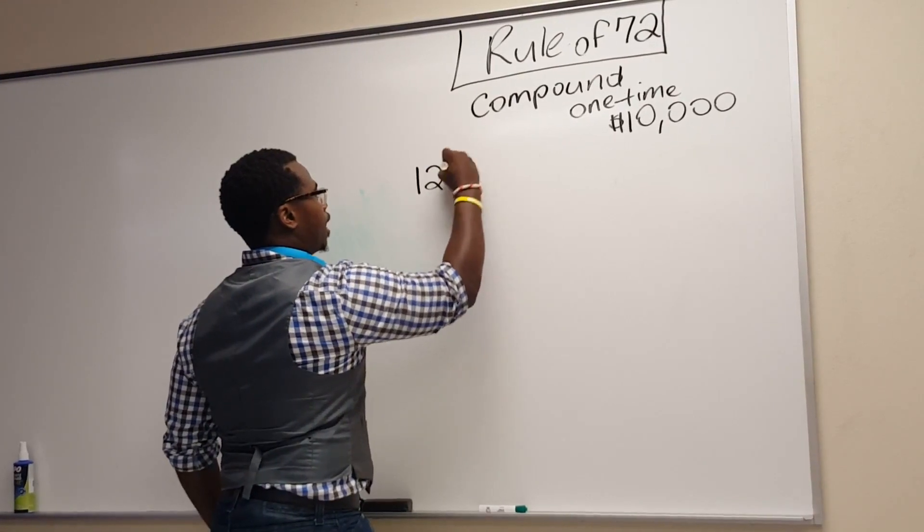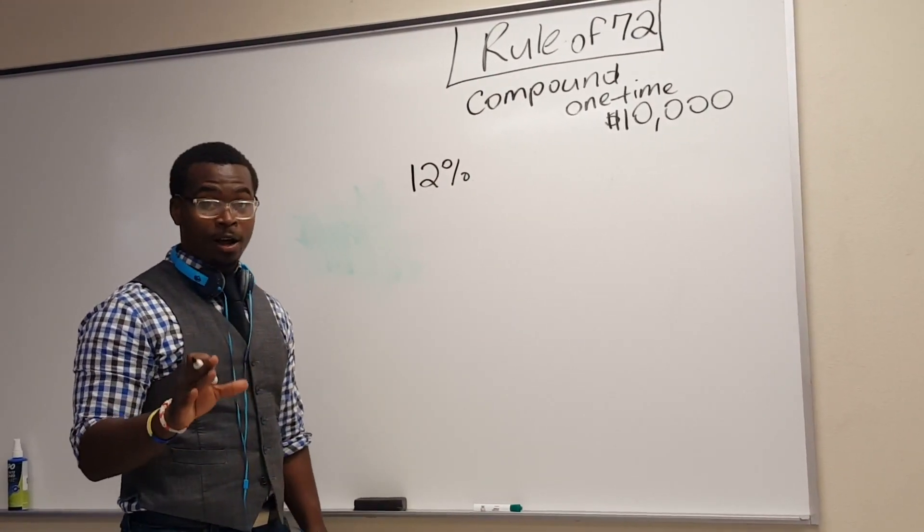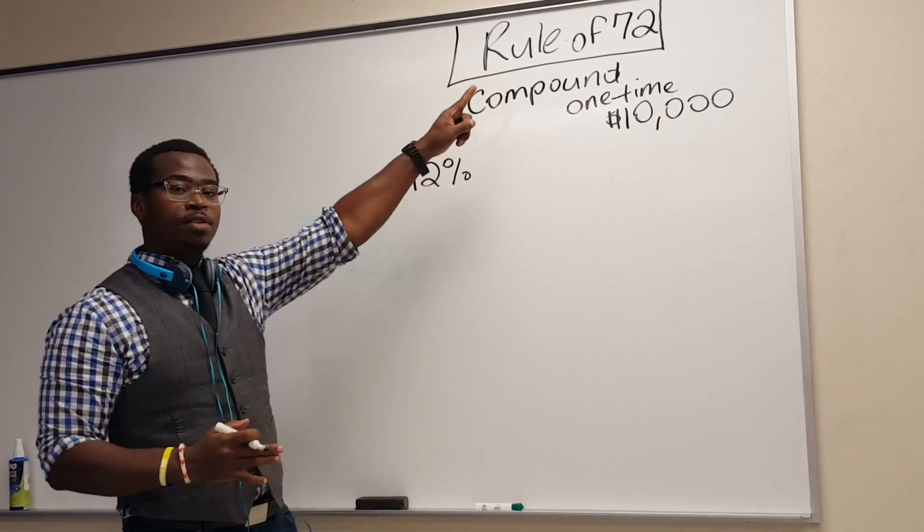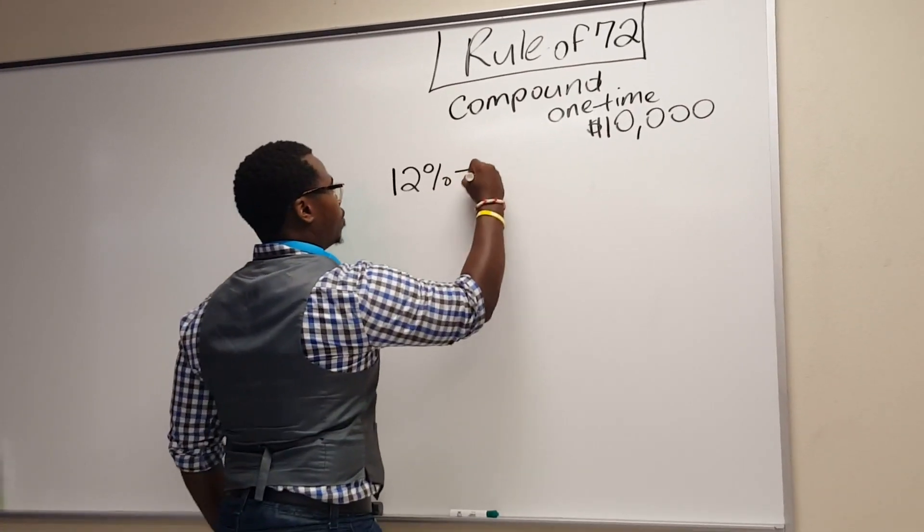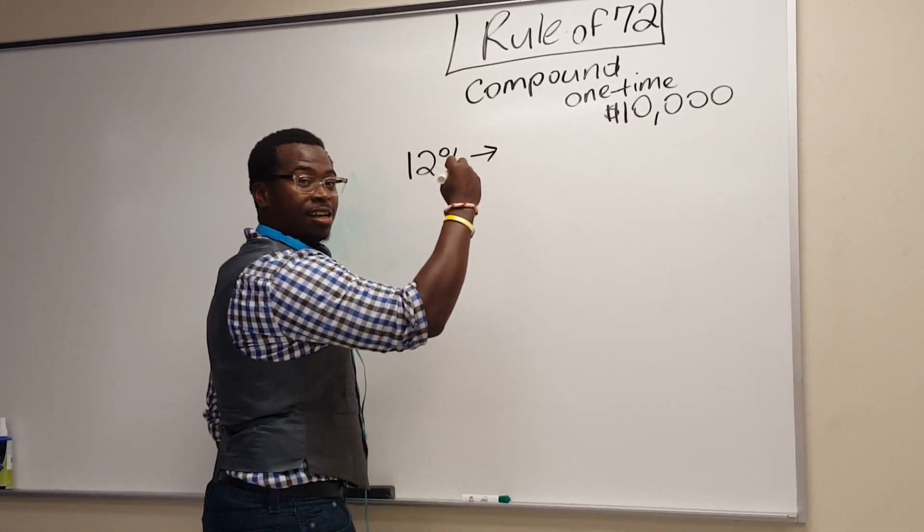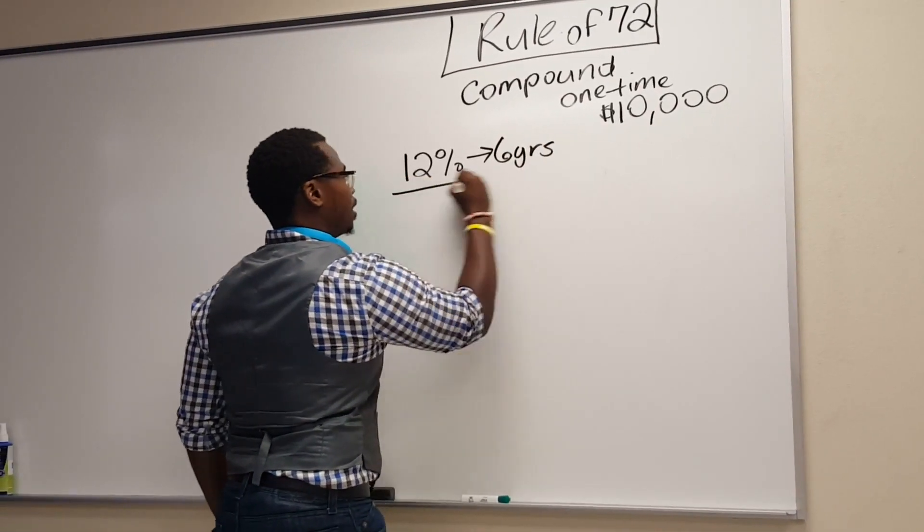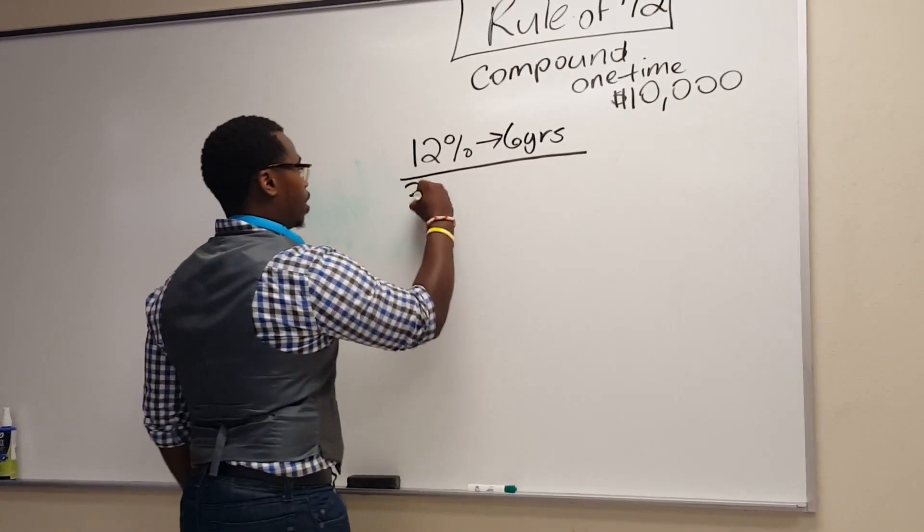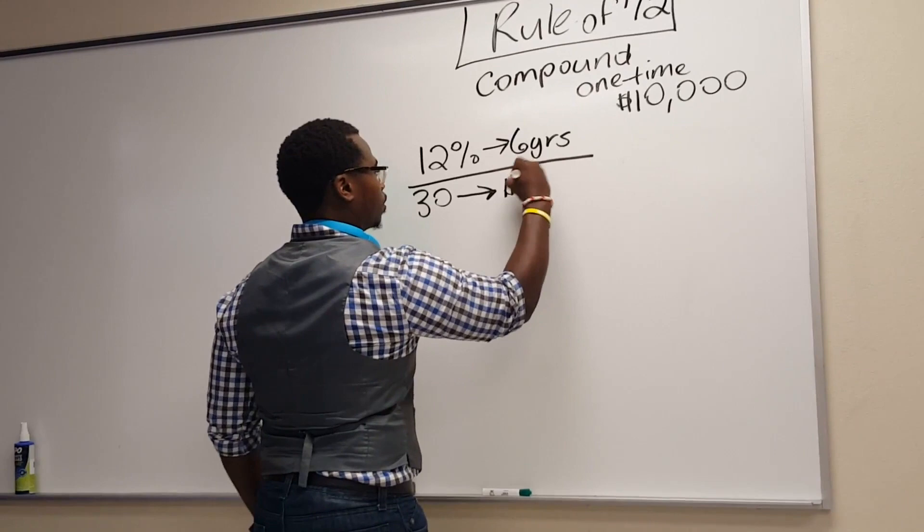So let's look at 12%. And this is what's called the banker's secret. This is what the bank doesn't want you to know. So if we do follow the rules again, what are the rules? Take 72, divide it by 12. That means your money is going to double every, anyone want to guess? 6 years. Okay. So if it doubles every 6 years, that means that at age 30, again, you make that one-time investment. How much? $10,000.